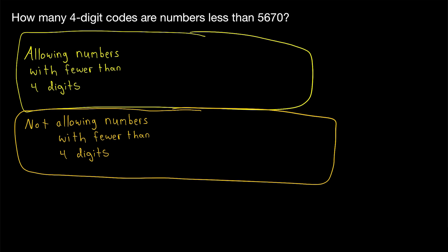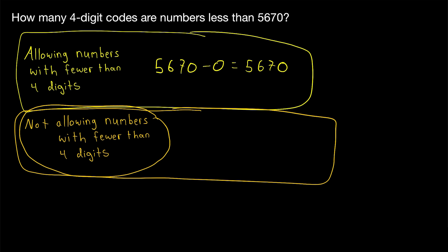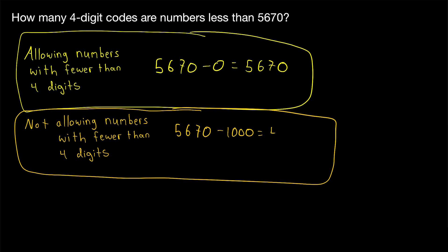Now, how does the subtraction method handle this problem? It handles it just as easily as before. If we allow four-digit codes that represent numbers with fewer than four digits, the answer is just 5,670 minus 0 — a total of 5,670 codes. If we're not allowing four-digit codes that represent numbers with fewer than four digits, then the answer is 5,670 minus 1,000, which is 4,670 codes.